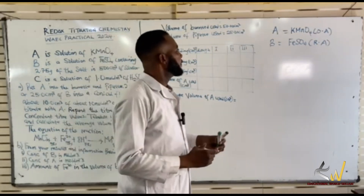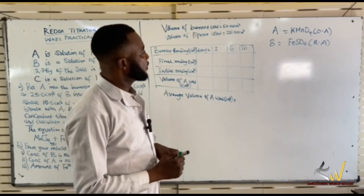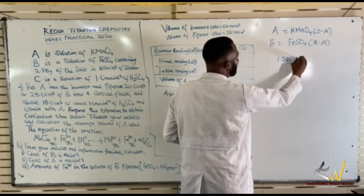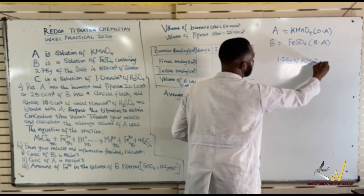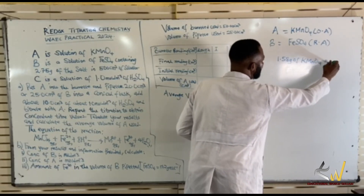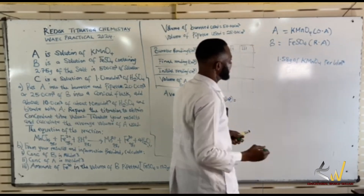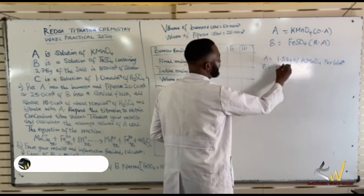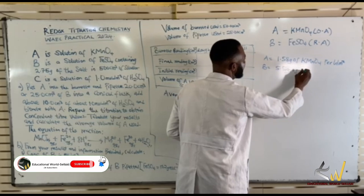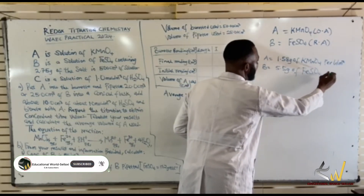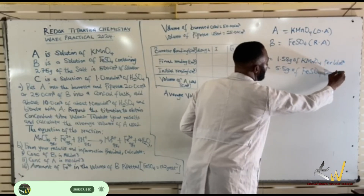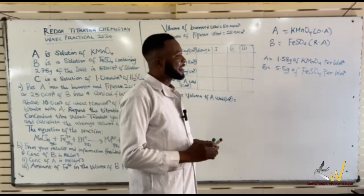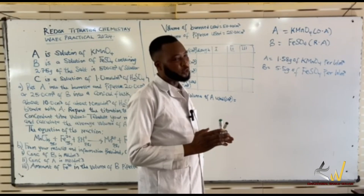In this redox titration, we are asked to measure 1.58 grams of KMnO4 and make it up to 1 dm³ of distilled water. We are also asked to measure 5.5 grams of iron sulfate and make it up to 1 dm³ of distilled water.